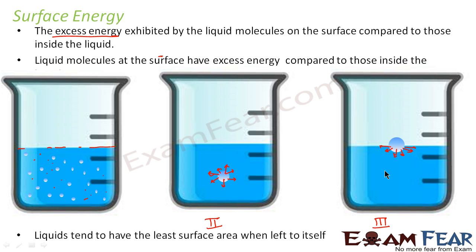Liquids always tend to have the least surface area when left to themselves. Any liquid particle, when left to itself, will always tend to have the least surface area. Because more surface area would require more energy, the liquid will not want to spend more energy and acquire more surface area — so as a natural tendency, it will always try to acquire the least possible area.